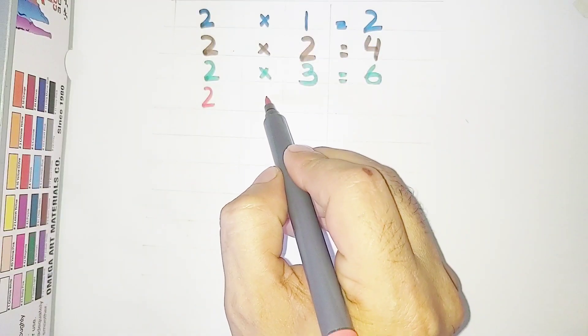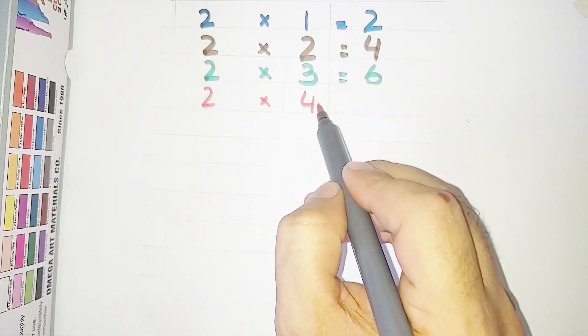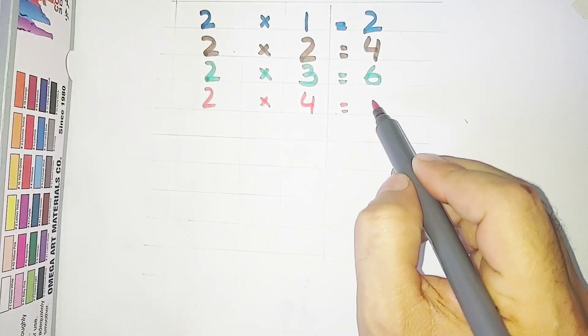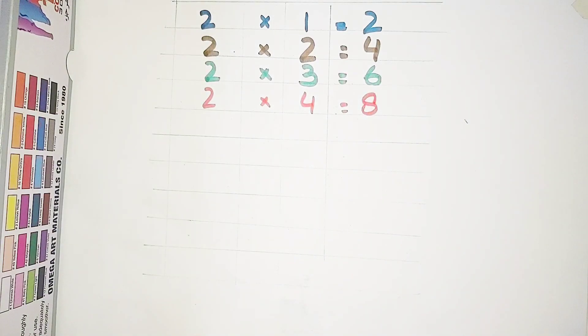2 multiplied by 4 is equal to 8. 2 fours are 8.